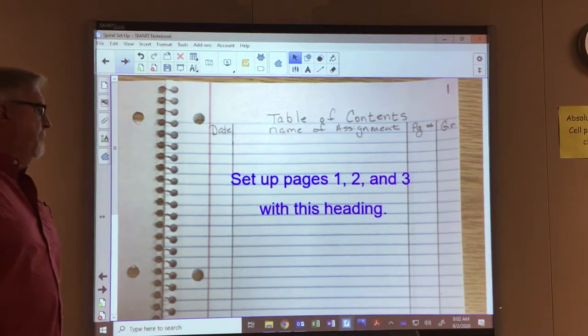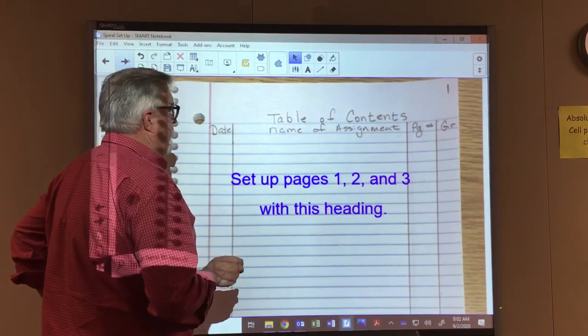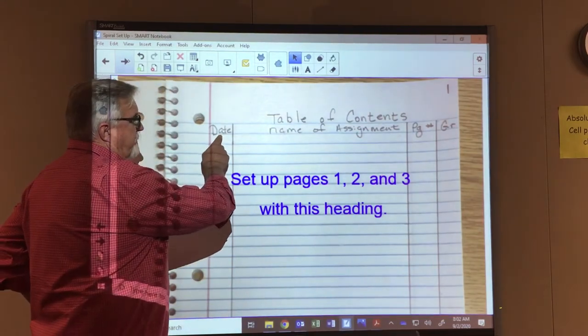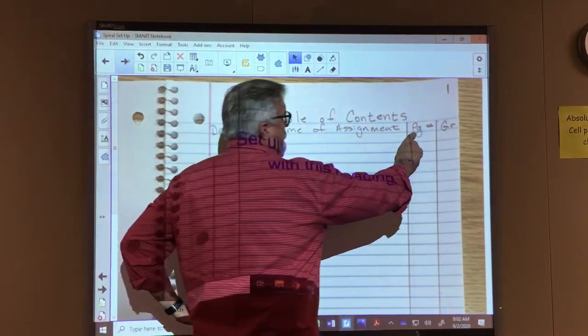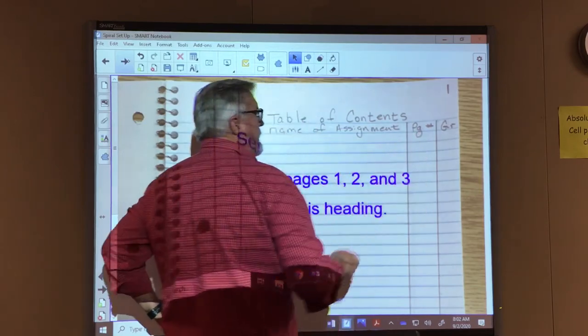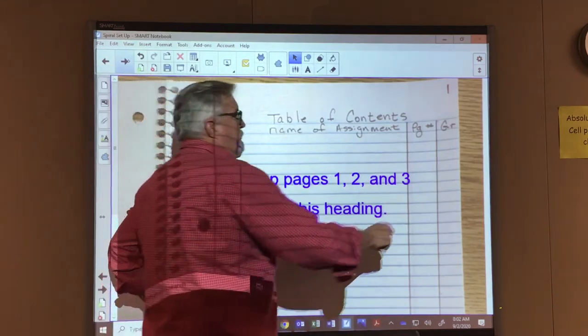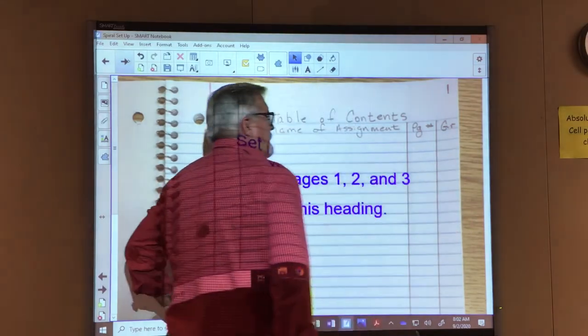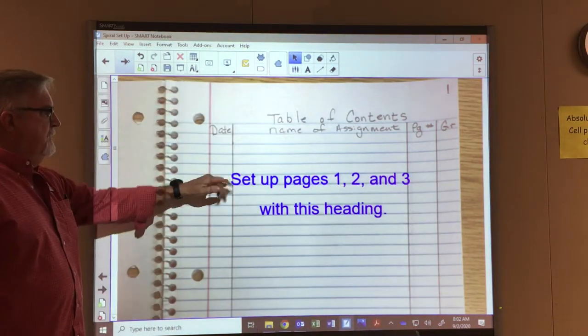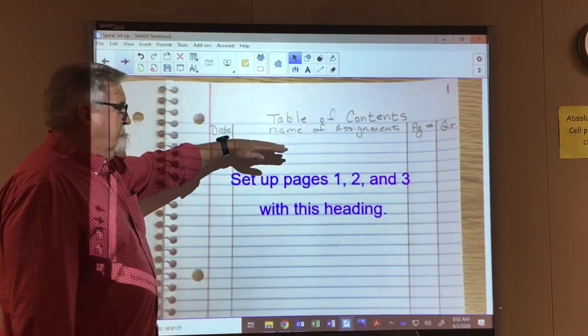Okay, now that we're done numbering our pages, the next thing we're going to do is set up our table of contents. We're going to make four columns on our page: a column for the date, a column for the name of the assignments, a column for the page number—that's the page number in your spiral that you did this assignment—and then a fourth column for your grade. So once your assignment's graded, you can go ahead and write your score in there. We're gonna set up pages one, two, and three just like this.